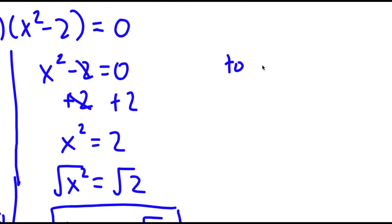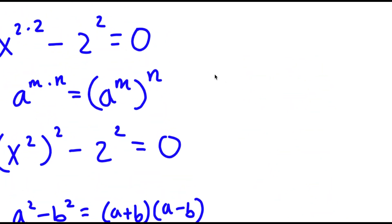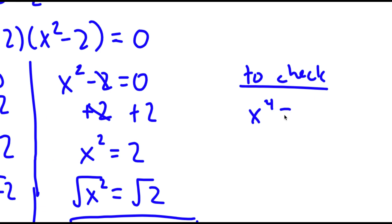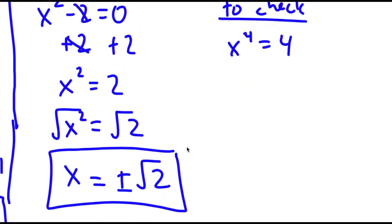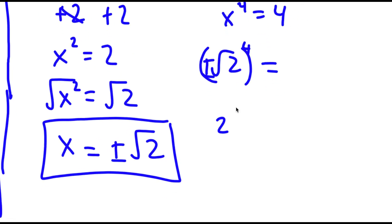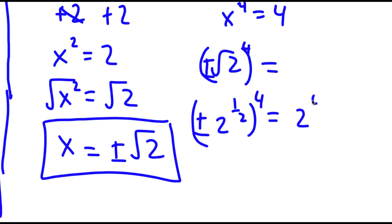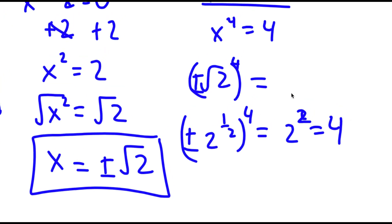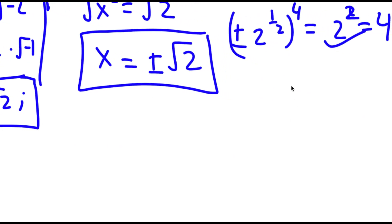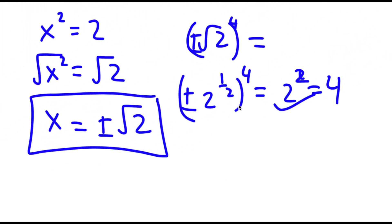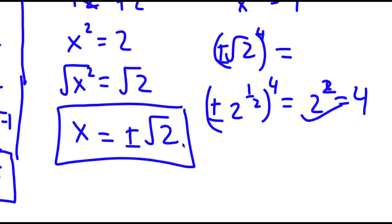Now I'm going to check. My original equation was x to the power of 4 is equal to 4. The square root of 2 to the power of 4 — because this is an even exponent, it doesn't matter if it is positive or negative, it's going to be the same result. The square root of 2 is the same thing as 2 to the 1/2, so I have 2 to the power of 1/2 to the power of 4, which equals 2 to the power of 2, which equals 4. This works, and for the square root of 2i it's exactly the same. So my 4 solutions are correct.